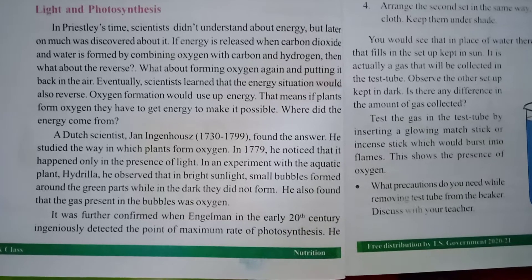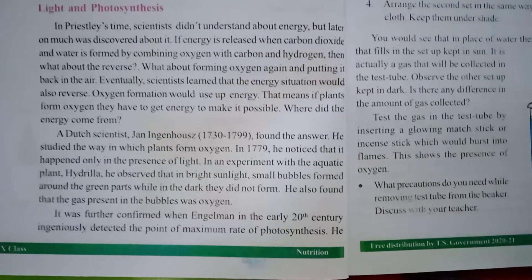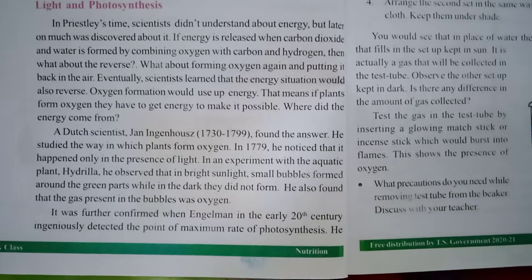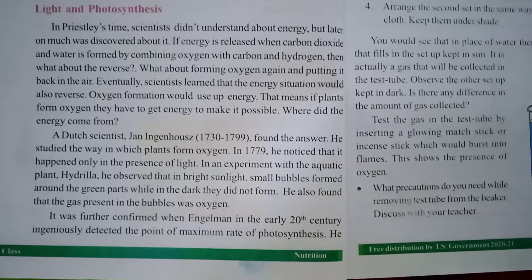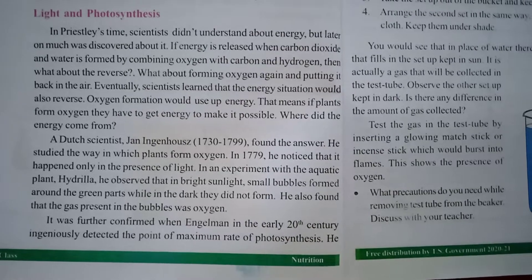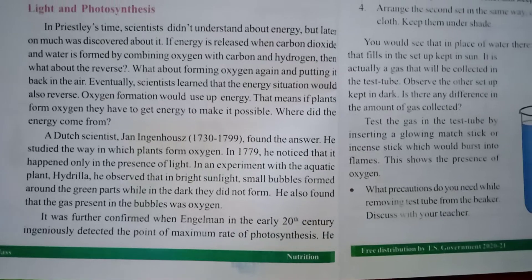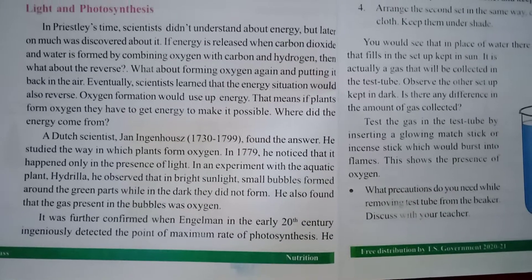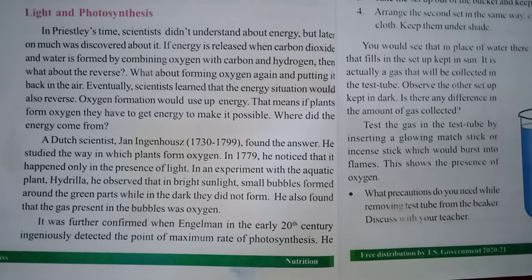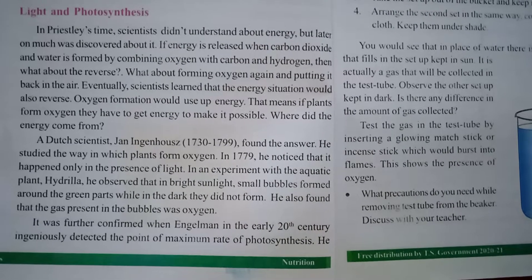Two scientists' information is given here. Jan Ingenhousz — he was a Dutch scientist, and in the years 1732 to 1799, he found the answer for how light plays an important role in photosynthesis. He conducted experiments on the Hydrilla plant, which is an aquatic plant, during sunlight.